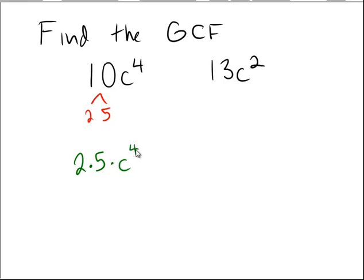On the right-hand side, we have 13, which is already a prime number, so it can't be broken down any further, and then we have a c squared. The greatest common factor of two monomials requires taking the largest possible exponent on every base that you can possibly take.